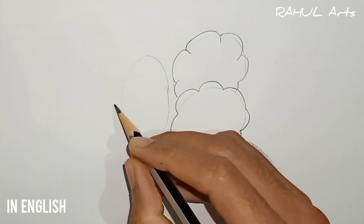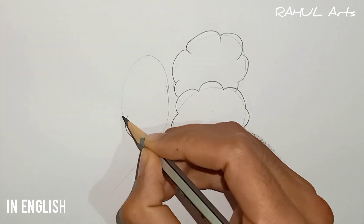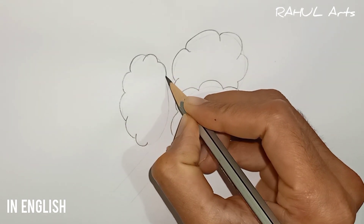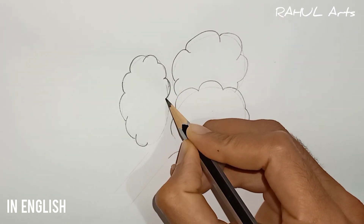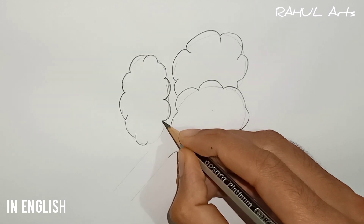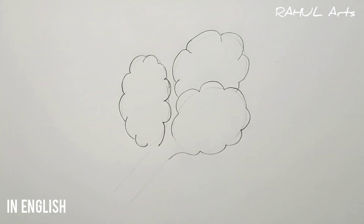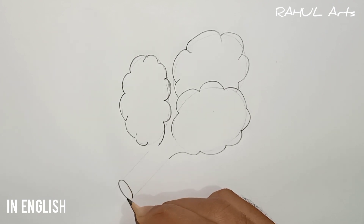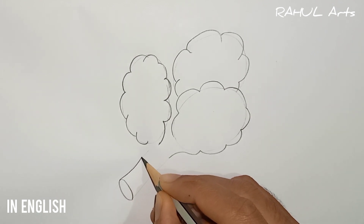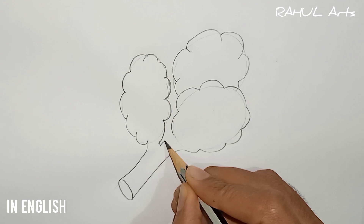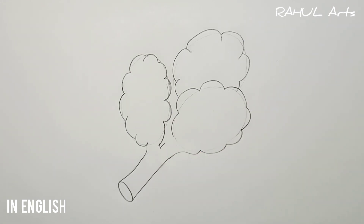Do the same thing with the third oval. Now after completing the third oval, draw the lower part of the stem as a small oval, as you can see on the screen. Now join the small oval with the cloudy structures through the alveolar duct, which we drew in the rough sketch.